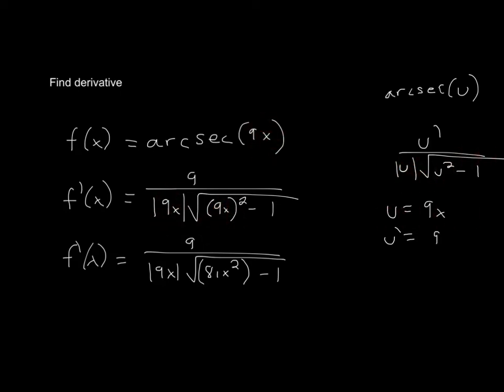And here, it's going to be 9x squared, so u squared - well, u is 9x, so 9x squared minus 1.